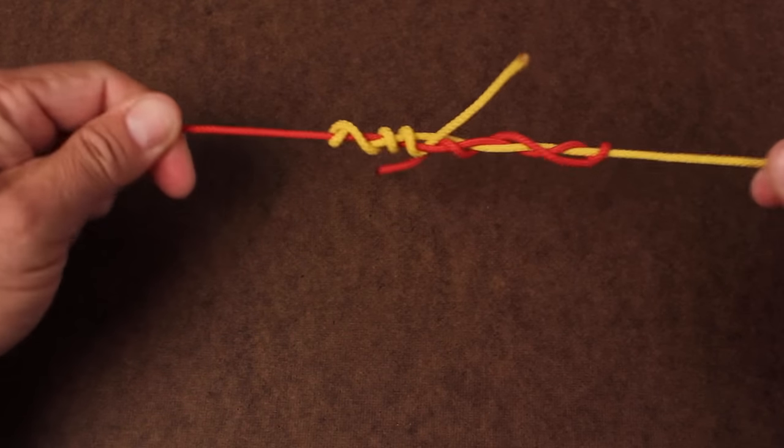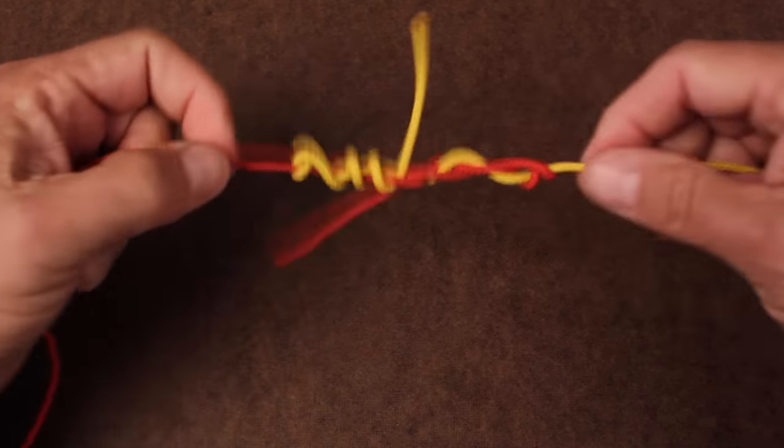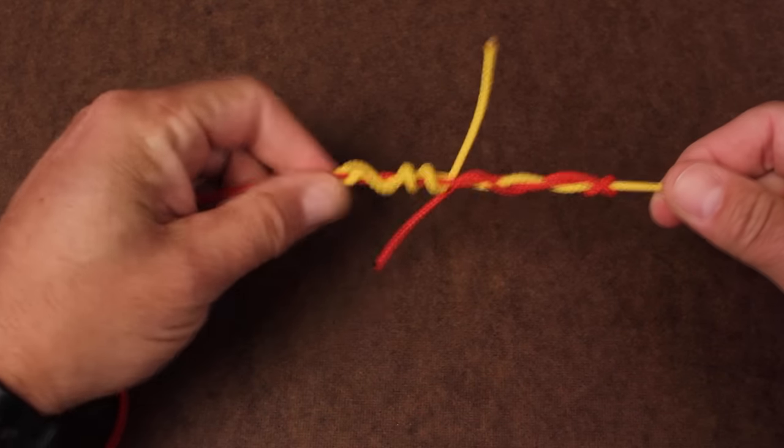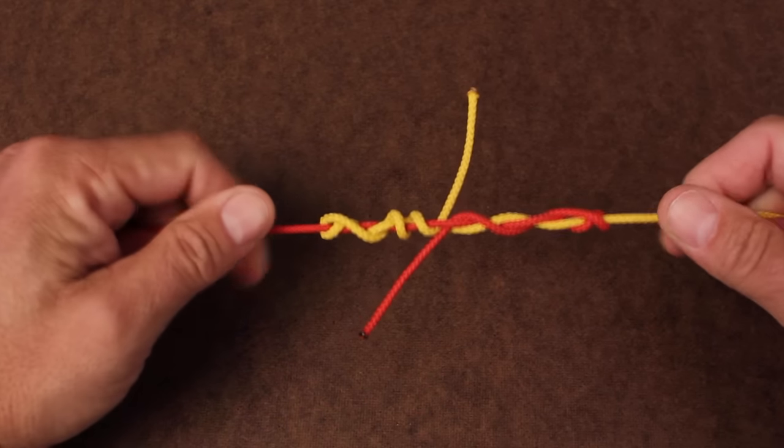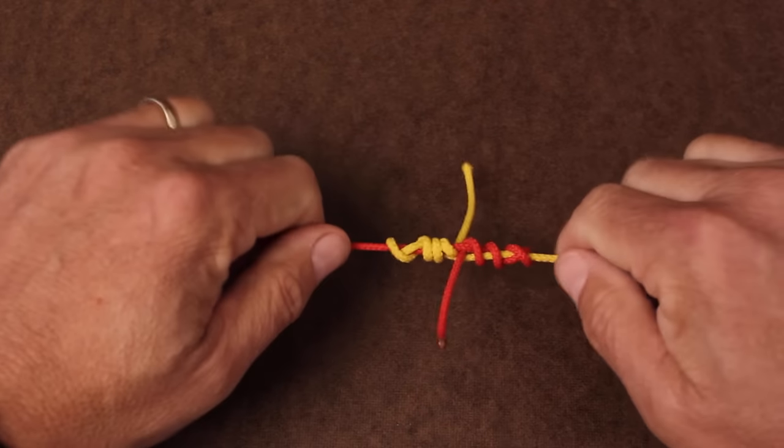When using mono, this is where you need to lubricate the knot. Most people use saliva. Continue to draw the knot closed until it forms a nice symmetrical barrel shape, like so.